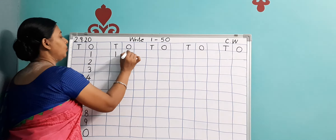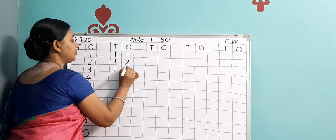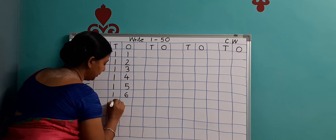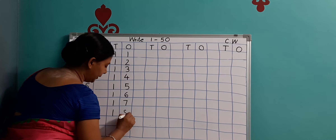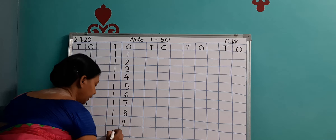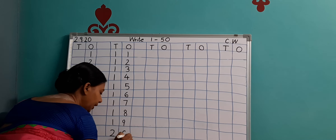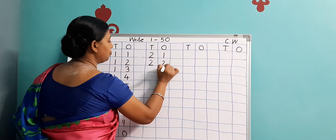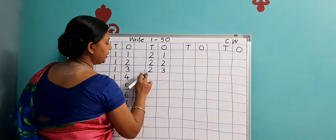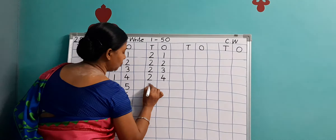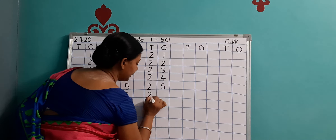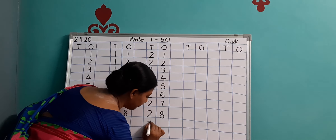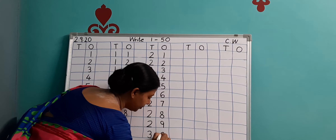Then 5, 6, 7, 8, 9 and 1, 0 — ten. After 10 comes 11, 12, 13, 14, 15, 16, 17, 18, 19. Then this 1 will become 2 over here and below 9 we write 0 — twenty. Then 21, 22, 23 — 20 will always come here — 24, 25, 26, 27, 28, 29, 30.